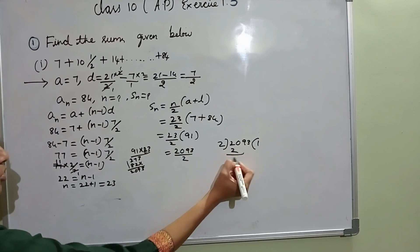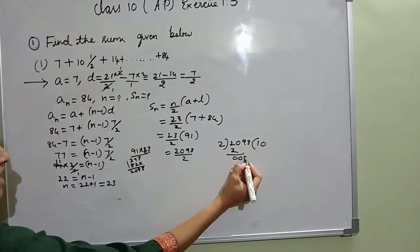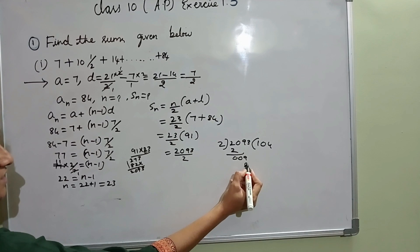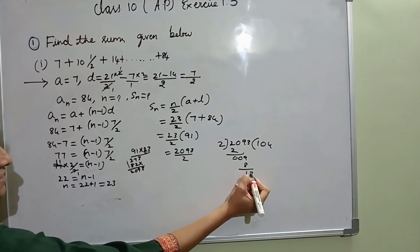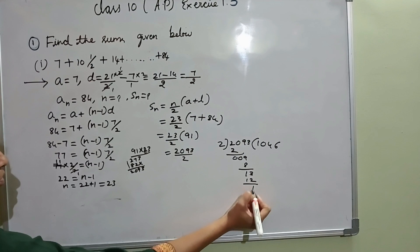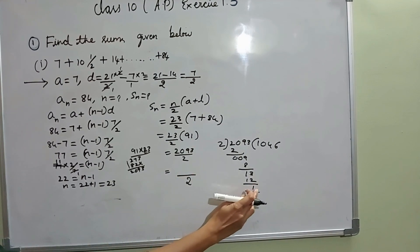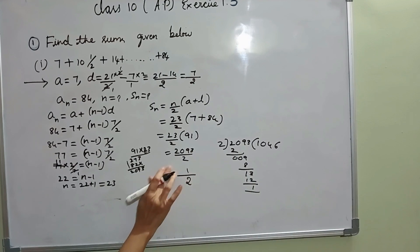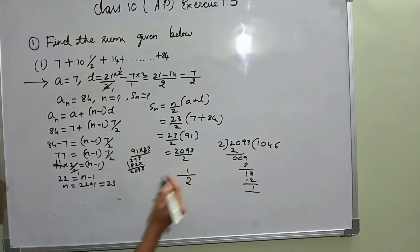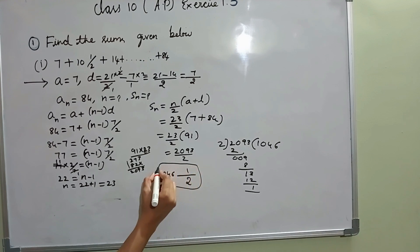Dividing 2093 by 2: 2 ones are 2, remainder 0; 9 divided by 2 is 4, remainder 1; 13 divided by 2 is 6, remainder 1. The quotient is 1046 and remainder 1, so the mixed fraction result is 1046 and a half.